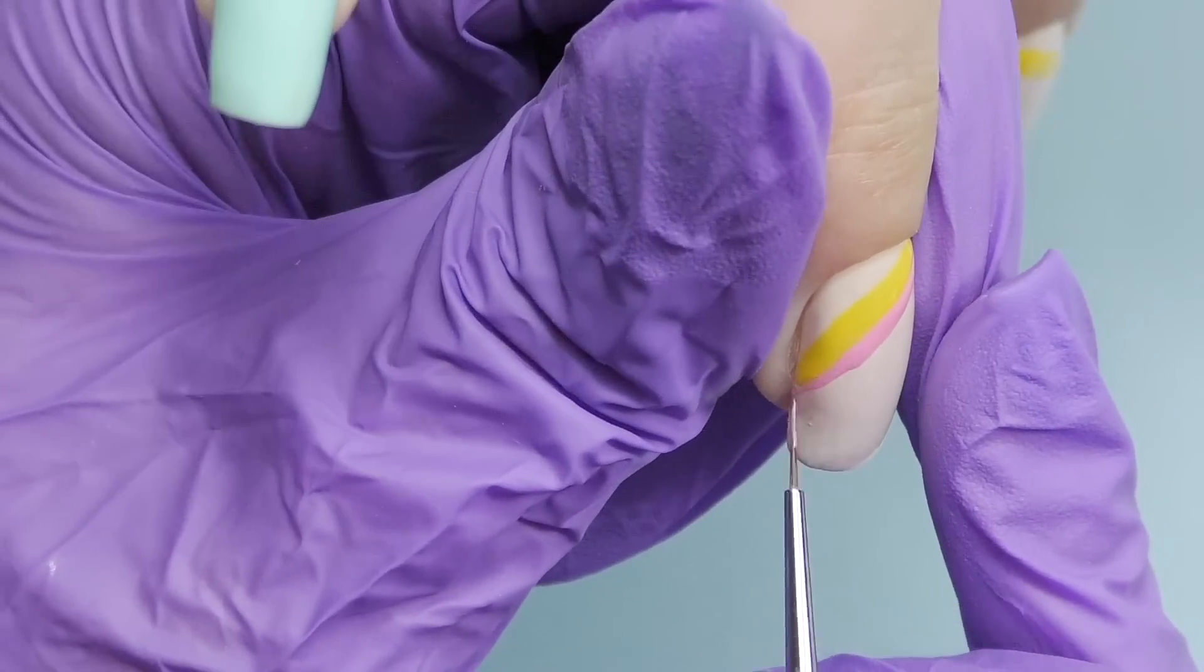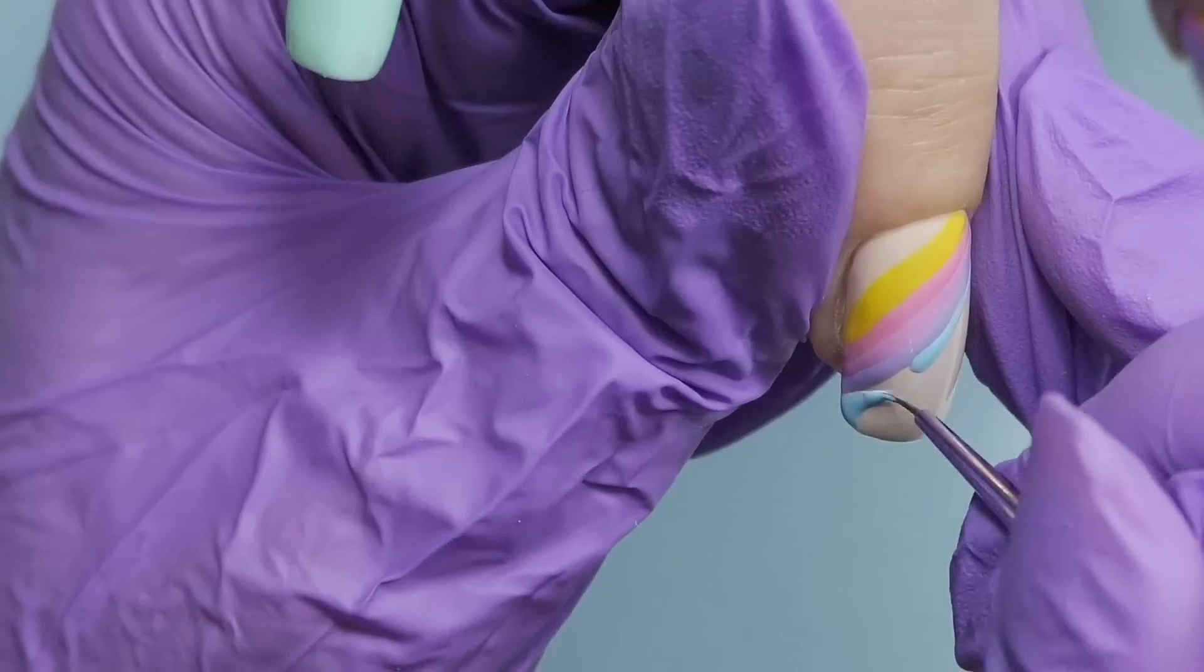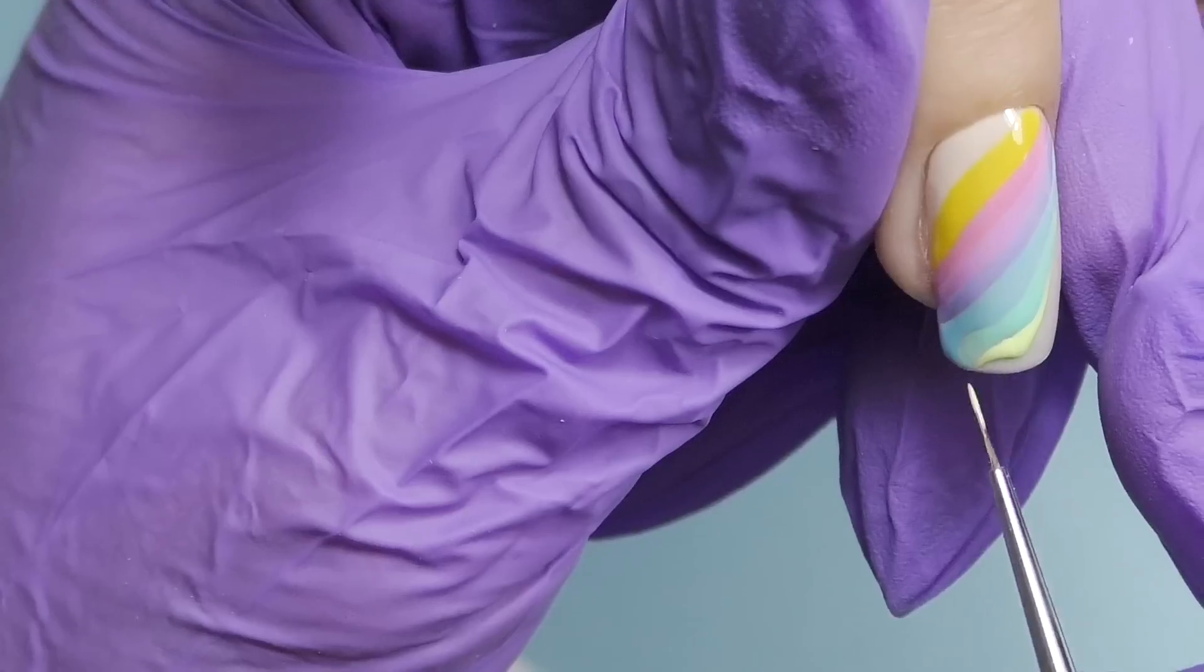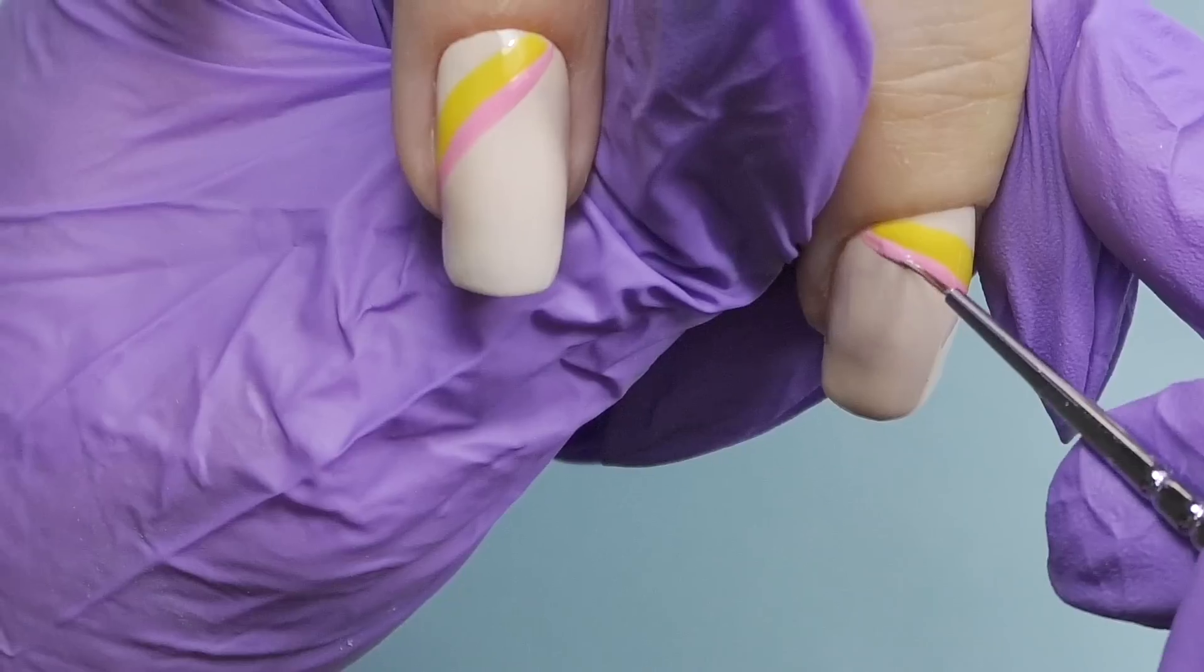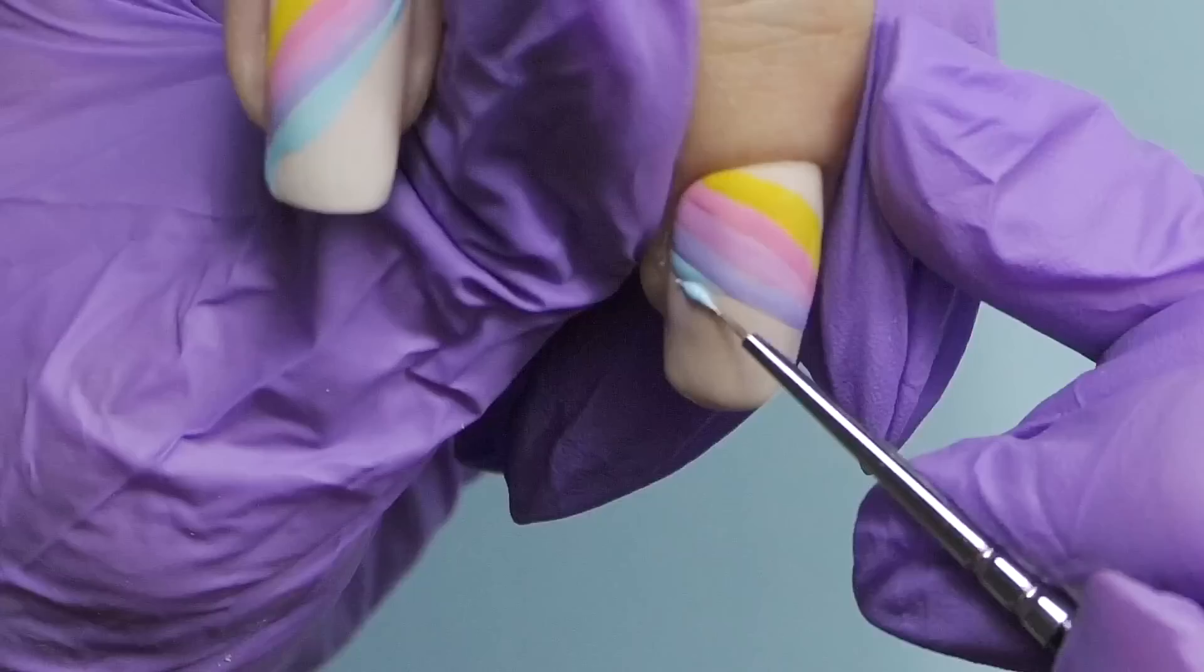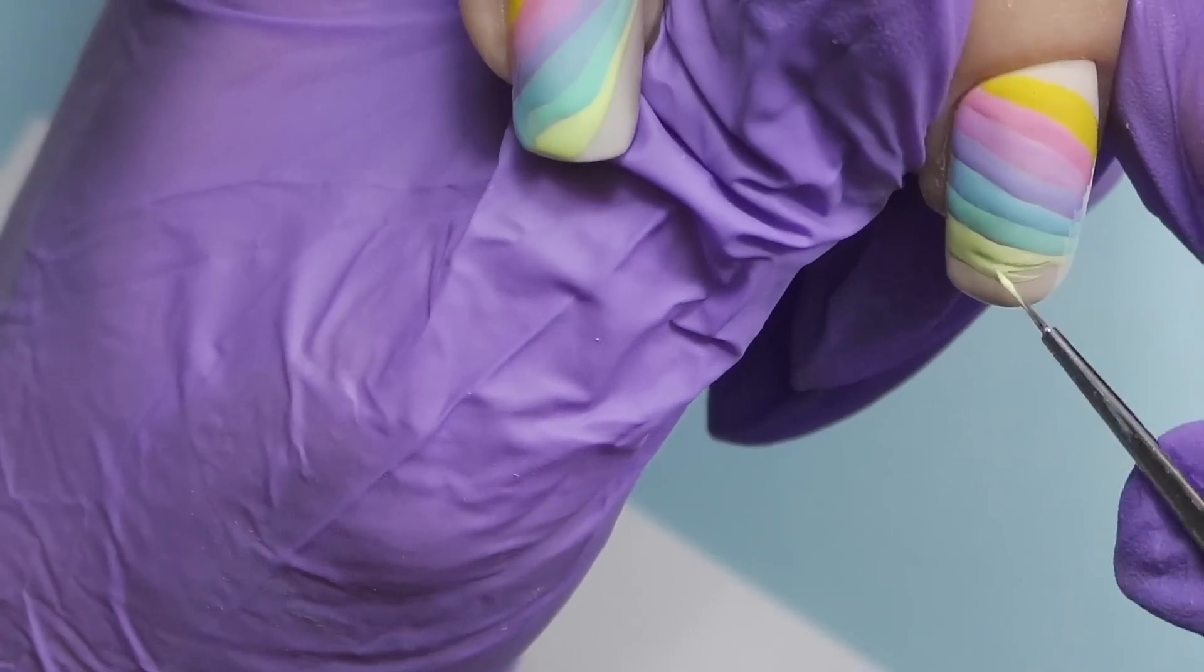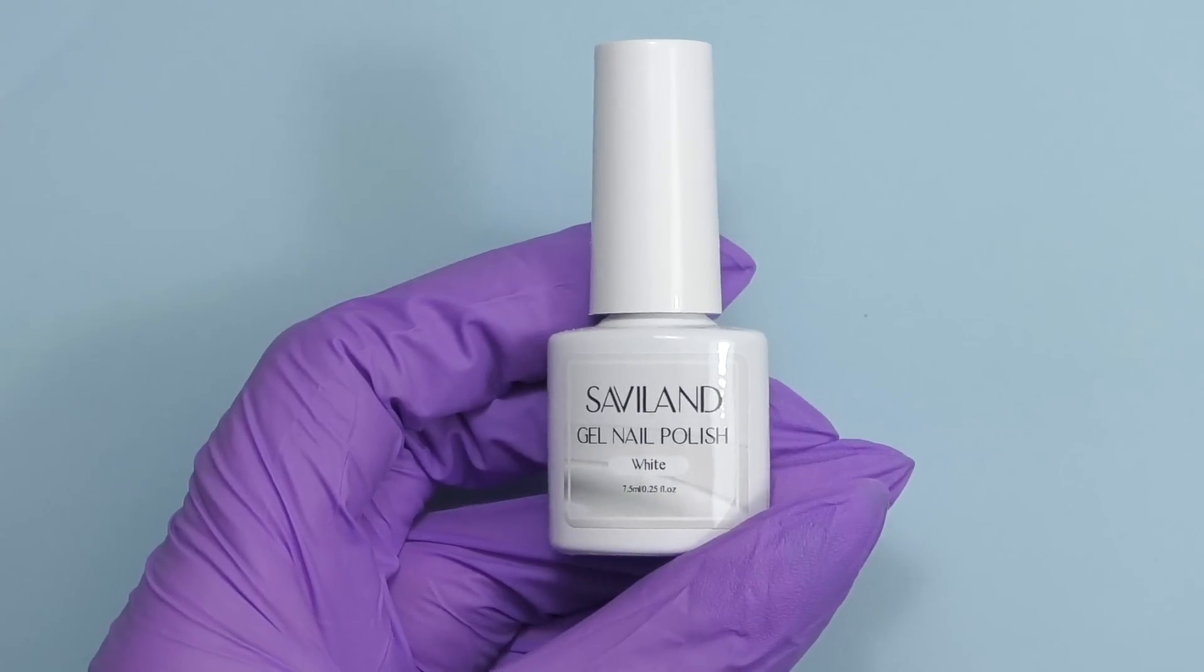I'm going to do two rainbows on two nails. So, I just take one color and add two lines on each, then I proceed to the next one, and so on. You don't need to fully cure each color all the time. It's enough to flash cure it for like five seconds, just to make sure it's not going to move and it's not going to mix with the next color and then you simply proceed. And then we cure it for one minute in LED.